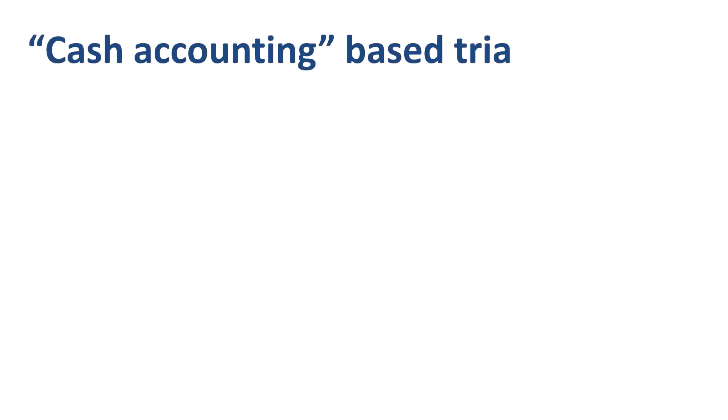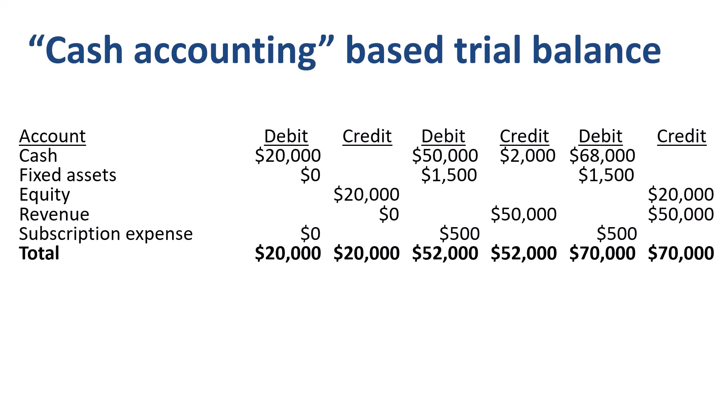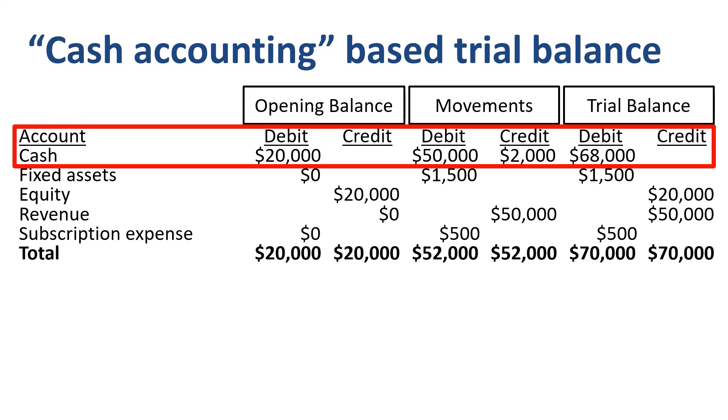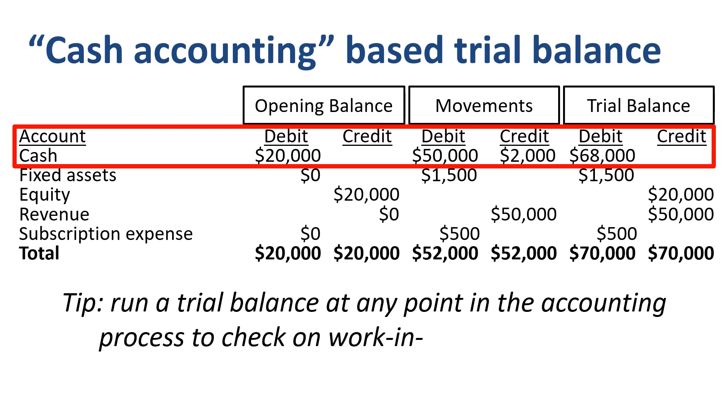We can now put together an initial trial balance by combining the current period opening balances with the current period movements by account. Let's take the cash line as an example. The opening balance is $20,000. We debited the account for $50,000 when we received cash, and credited the account for $2,000 for the two journal entries where we spent cash on the laptop and the newspaper subscription. So the amount on the trial balance is $20,000 plus $50,000 minus $2,000 equals $68,000. A trial balance is a listing of all ledger accounts along with the respective debit or credit balances. You can run a trial balance whenever you'd like to check on the work-in-progress balances and decide what action is needed next.